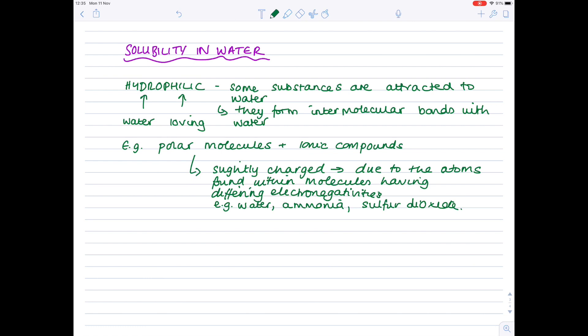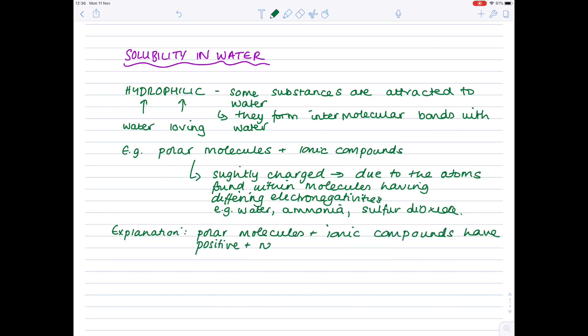Now, the reason why polar molecules and ionic compounds are hydrophilic is because these substances dissolve in water because the ions or molecules that they're made up of are more attracted to water than each other. So the polar molecules and ionic compounds have positive and negative charges which are attracted to the delta, so slightly negative, and delta positive, slightly positive, ends of the water molecule.